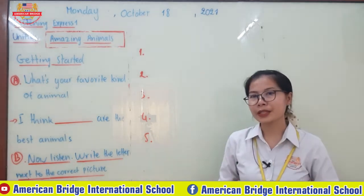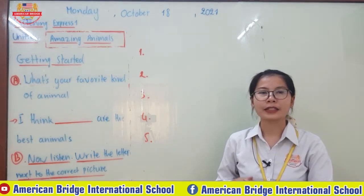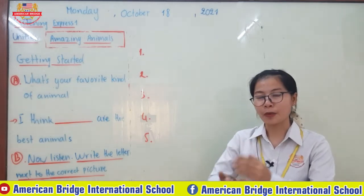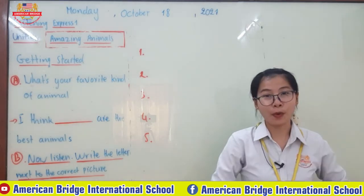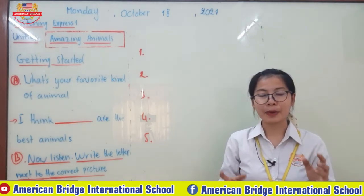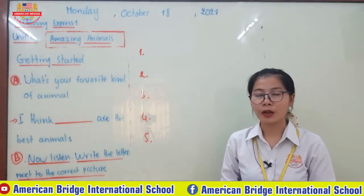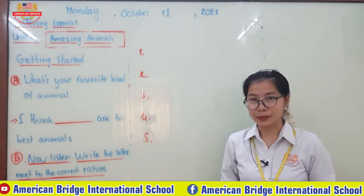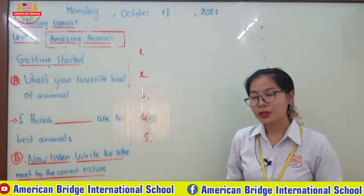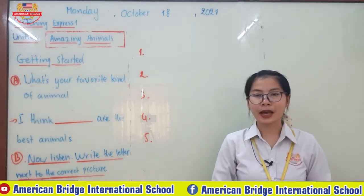We refer to the great animal — the different kinds of amazing elephants and normal animals that have some special things or special points, which is why we call them amazing animals. Today you are going to learn about Getting Started.